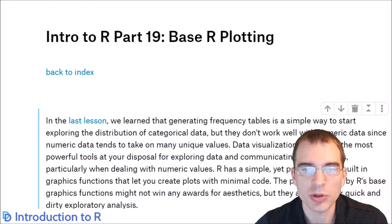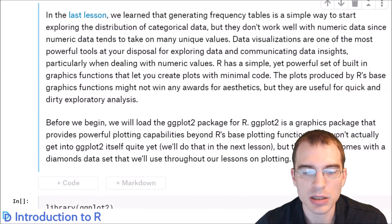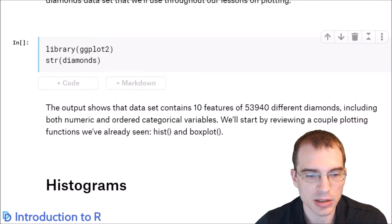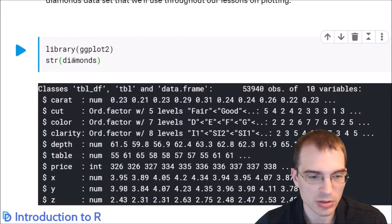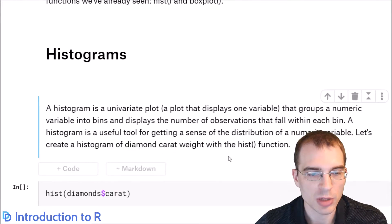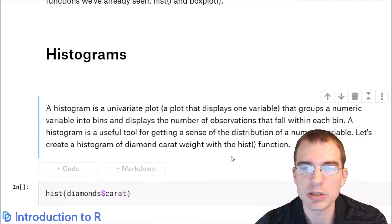For this lesson, we're going to load in the Diamonds dataset. This is a dataset that is included with the ggplot2 library, so that's why we're loading in ggplot2, only to gain access to this dataset. We're not actually going to use ggplot2 in this lesson. We're going to load that in so that we can get Diamonds. We'll start by showing what a histogram is and how to make one.